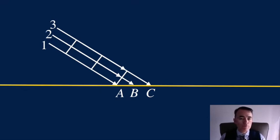Because the wavefronts come at an angle, ray 1 reaches the interface before ray 2 and before ray 3.